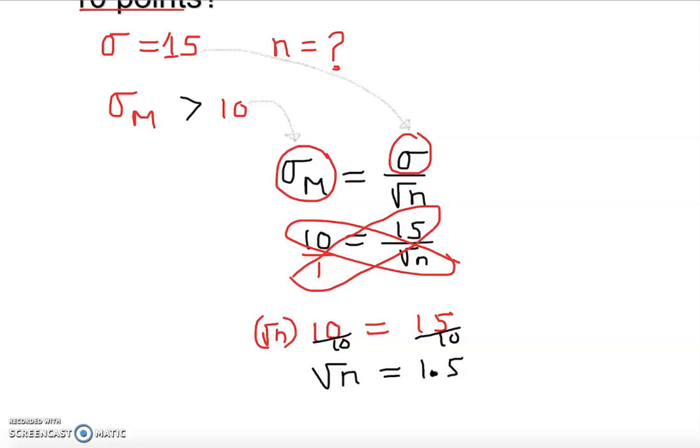And of course we are looking for n only, so what do we do? We just do the opposite, so we just square both sides. Square this side, square this side. And of course n is equal to 2.25 if I square.